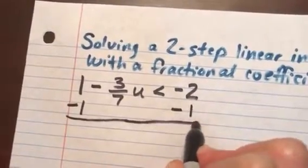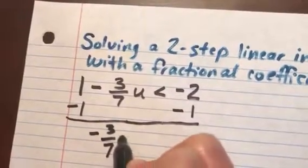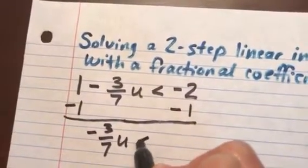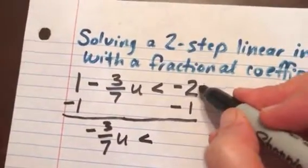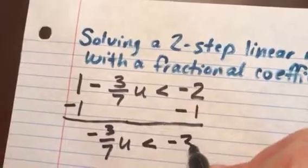When I do that, I'm left with negative 3 sevenths u on the left-hand side is less than negative 2 minus 1 would be negative 3 on the right-hand side.